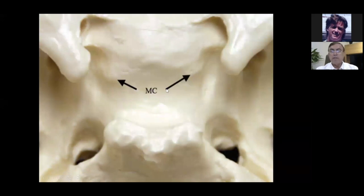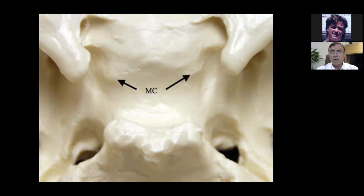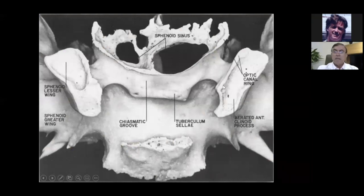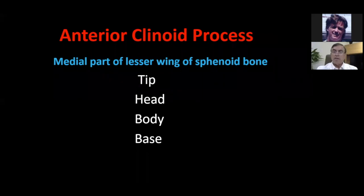Here we have the body of the sphenoid, the anterior clinoid, the optic canal, and sometimes you get this middle clinoid. This is the dorsum sellae and the posterior clinoid. The body contains the sella on top, the sphenoid sinus inside. This is the anterior clinoid, and this is the optic strut separating the optic canal from the superior orbital fissure. Anterior clinoid is really big, and some people classify it into a tip, a head, a body, and a base.